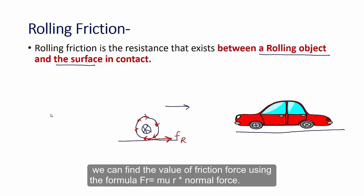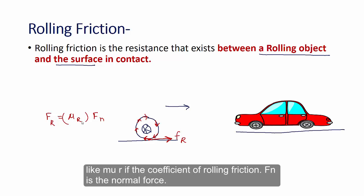We can find the value of rolling friction force using the formula. FR equals mu R times normal force. Like mu R is the coefficient of rolling friction. Fn is the normal force.